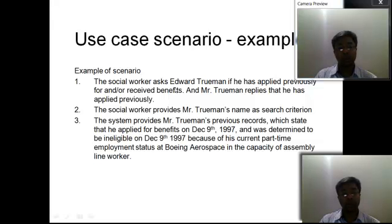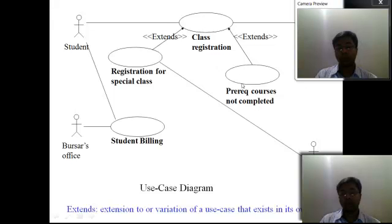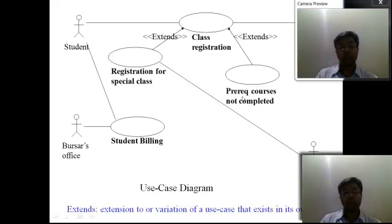Another example involves scenarios for student class registration. A student doing class registration is the primary use case. There are two options: registering for a special class may or may not apply, making it an extended relationship, and dropping a course is another option. Registering for a special class also involves the instructor as an actor, while the registrar's office handles billing to the student — students are paying for each of the courses.